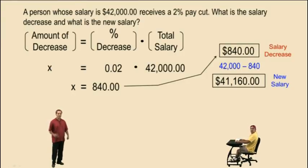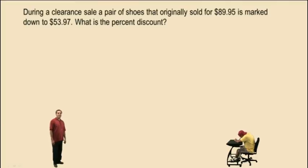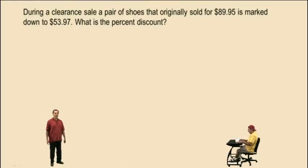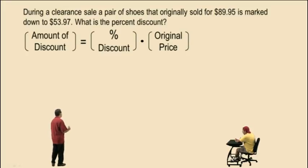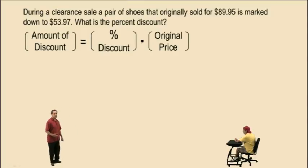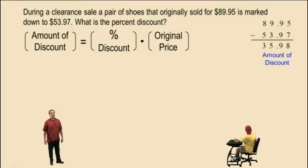Let's do one more problem. This problem involves discount. During a clearance sale, a pair of shoes that originally sold for $89.95 is marked down to $53.97. What is the percent discount? A salesperson may tell you that's a 50% discount — no, it's not. Let's see what the answer actually is. Remember our structured format: a portion equals a percent times the total. So in this problem, the amount of discount, which is the portion, equals the percent discount times the original price. We are not given the amount of discount directly, but the original price was $89.95 and the discounted price was $53.97, so we take the difference and get $35.98 — that is the amount of discount.